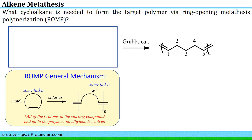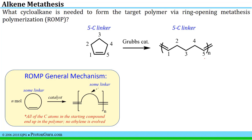It's helpful to think about the ROMP general mechanism, where you have some initially cyclic alkene — as the term ring opening suggests, it has to start as a ring to be opened. We're going to break that bond so that the same linker that links the two doubly-bound carbons in the starting material is present in the product. This is a case where you do not evolve ethylene; there aren't any CH2 chain ends, so all of the carbons in the starting material end up in the polymer. If we look at the length of the linker between the doubly-bound carbons in the product — which is five carbons long — we should have a starting material that is simply a cyclic version where five carbons link the double bond, as in the product. And that would be correct.